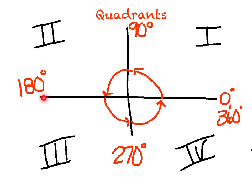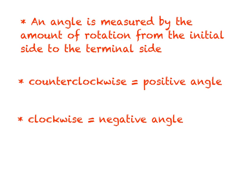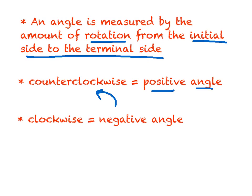An angle is measured by the amount of rotation from the initial side to the terminal side — that's how we measure angles in trig. The amount of rotation from the initial side to the terminal side: if you go counterclockwise, that's against the clock, that is a positive angle. And if you go clockwise, with the clock, that represents a negative angle.